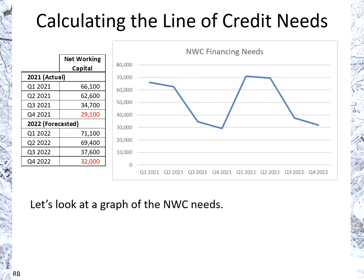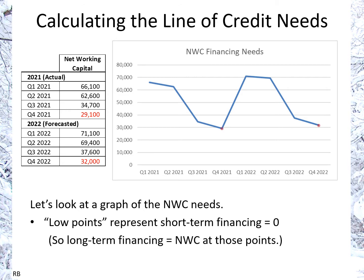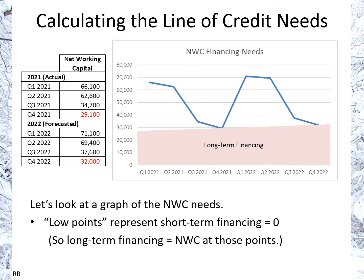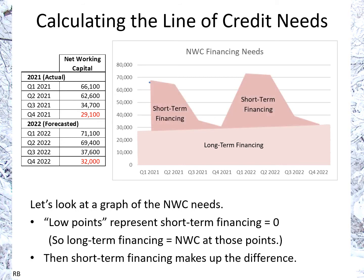Let's look at the graph. This is showing the two years and the seasonality. Q4 here is the low point, and the low points represent where we have zero short-term financing — which means we're going to cover that with long-term financing. You can also see there's a slight upward trend, and the rest is going to be covered with short-term financing.